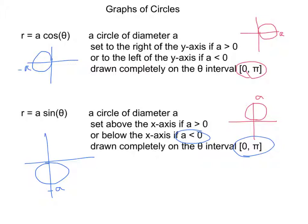We need to memorize that a cosine theta gives us a circle of diameter a, and the way that I think about it is these ones are both cut by the x-axis, and cosine theta has sort of an x feel to it. Similarly with sine, sine is cut by the y-axis. Those circles are cut by the y-axis, and sine has a y feel to it.